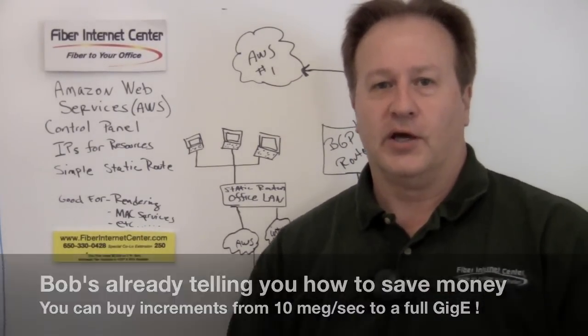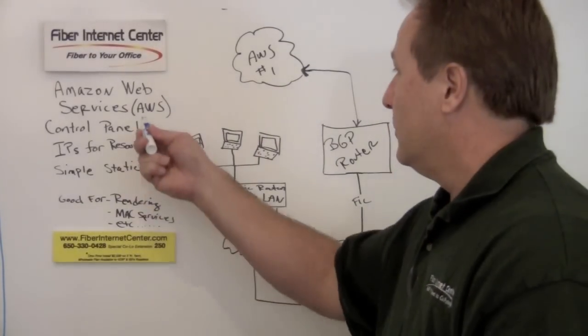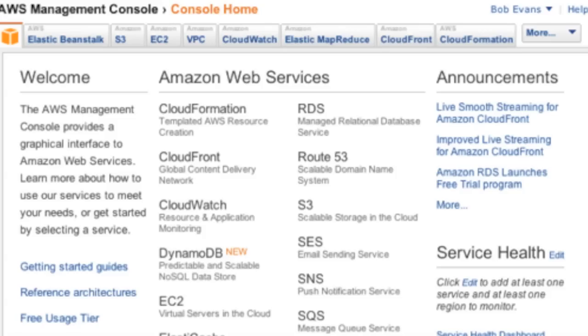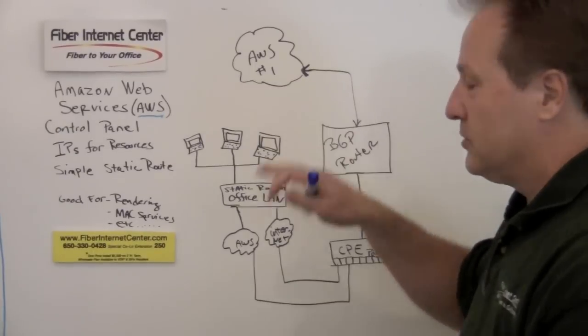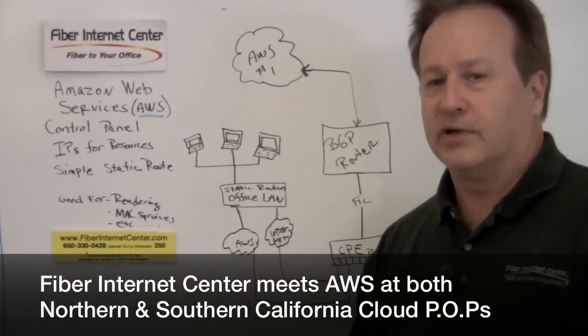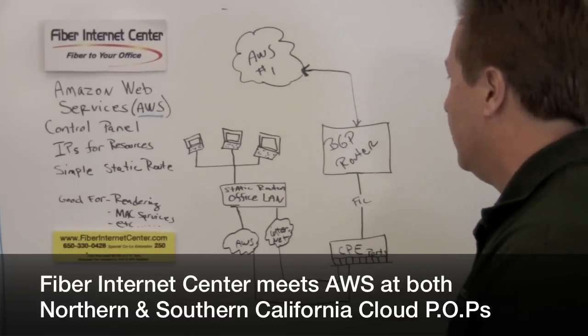So here we go. Amazon Web Services, commonly referred to as AWS, and you can go to aws.amazon.com and learn all about the services available there. Basically they have the Amazon Cloud. Actually there's lots of clouds. It's a whole sky of clouds. We're just going to talk about our first connection to the cloud here.